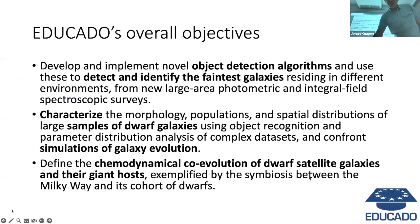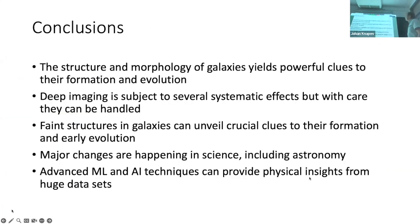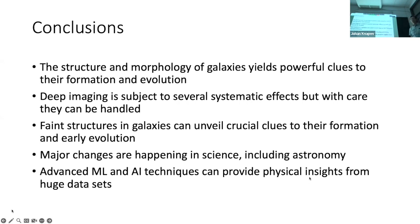So these are my conclusions. Structure and morphology of galaxies yields powerful clues to formation and evolution. Deep imaging is subject to several systematic effects, but these can be handled. Strange structures in galaxies can reveal crucial clues to their formation and early evolution. Major changes are happening in science including in astronomy, and advanced machine learning and AI techniques can provide physical insights from huge data sets. Thank you very much.